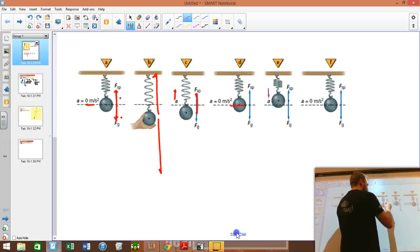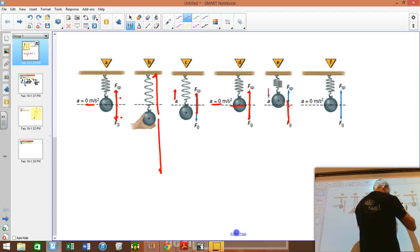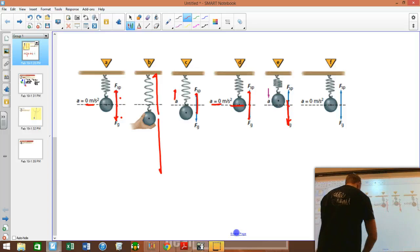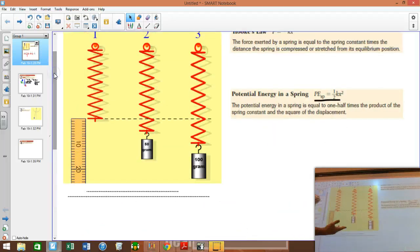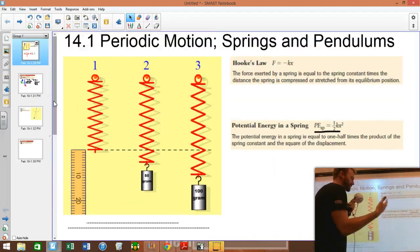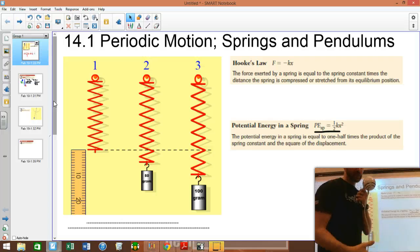So as this thing bobs up and down, there's accelerations in different directions and different amounts throughout the phases of its what's called periodic motion. Periodic meaning that it repeats itself over a certain period.